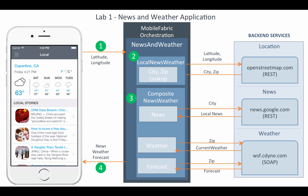In this test drive, we will walk you through Cordova applications that seamlessly integrate with the services exposed by the Mobile Fabric. We also provide an overview of the applications and show the execution of these Cordova applications in a pre-configured Android emulator. The application we will walk you through is called the news and weather application, which uses integration and orchestration services set up in Kony's Mobile Fabric or MBaaS server.